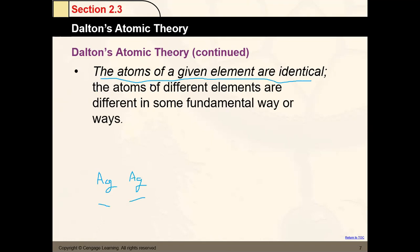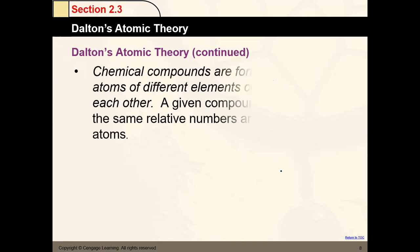The atoms of different elements are different in some fundamental way. If you compare silver versus potassium, they are both metals, but there is a reason why they are different elements — because they are not the same. They can differ based on the number of protons, neutrons, and electrons. Since they are different elements, their atoms are going to be different as well.